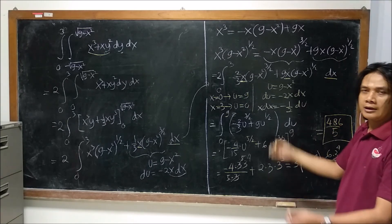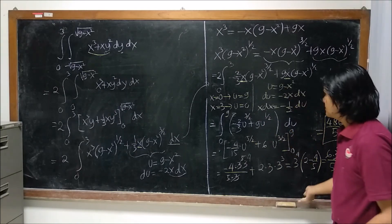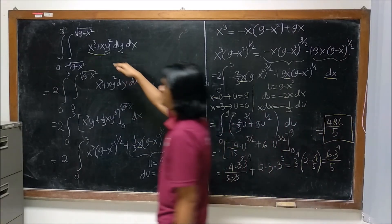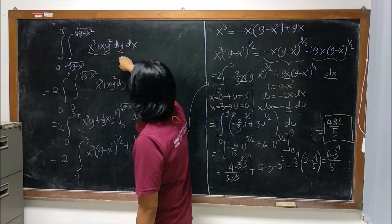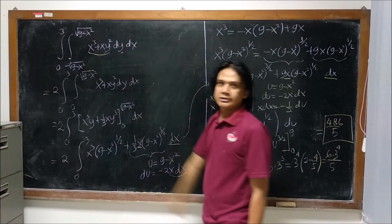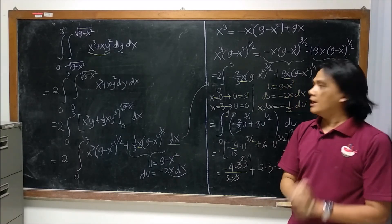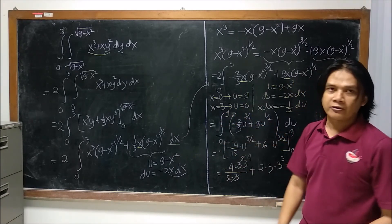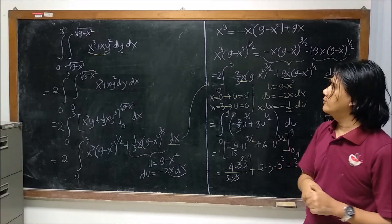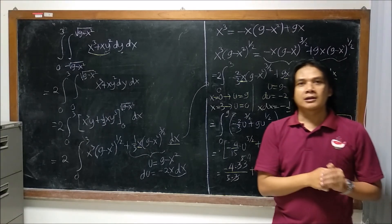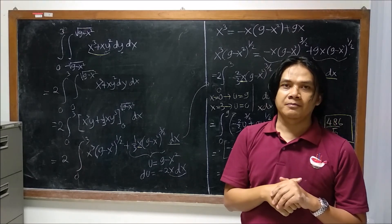You can compare that this result, 486/5, is exactly the same as the result using either polar coordinates or using the order of integration dx dy. That's it — thank you for watching. If you like the video, don't forget to hit the like button and subscribe. See you again in the next video. Bye-bye.